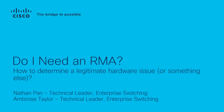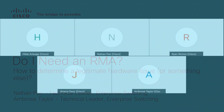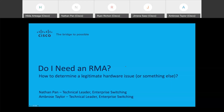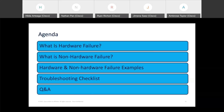That's everything from my side. I wish all of you learn a lot from this very useful session. In today's session, we're going to cover the topic: do I need an RMA? How can we determine we have a legitimate hardware issue or something else going on? Today's agenda covers: what is hardware failure, what is hardware non-failure, examples of both, a troubleshooting checklist, and a live Q&A at the end. We'll try to cover everything within an hour with about 15 minutes for questions.